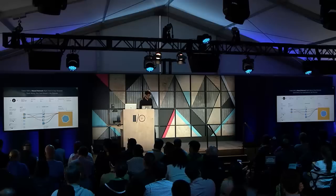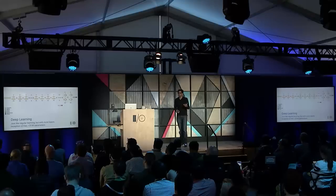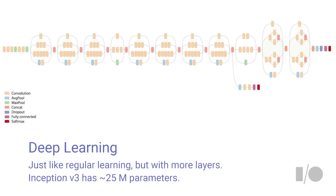In essence, deep learning is basically the same machine learning ideas but with more layers that allow you to get different kinds of abstraction. Of course, with that you get many more parameters. This example is for what we call Inception V3, which is our state-of-the-art image model for image classification — it gives you something near human accuracy.